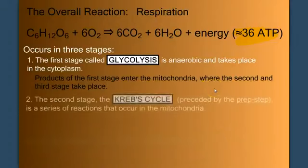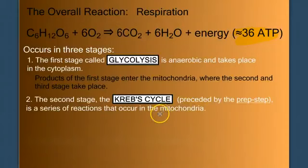The second stage of respiration is called the Krebs cycle. It's preceded by a preparatory step. And it's a series of reactions that occur in the mitochondria that are often referred to as a citric acid cycle because the first intermediate made is citrate or citric acid.